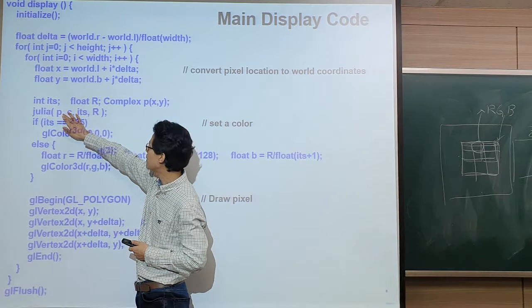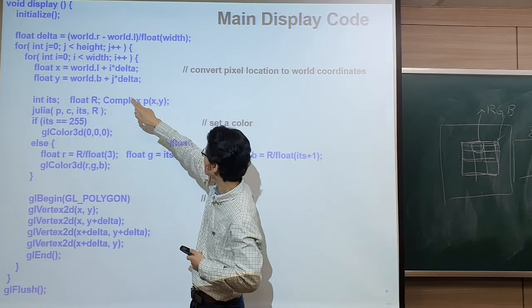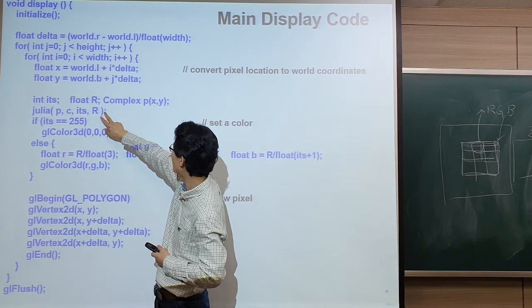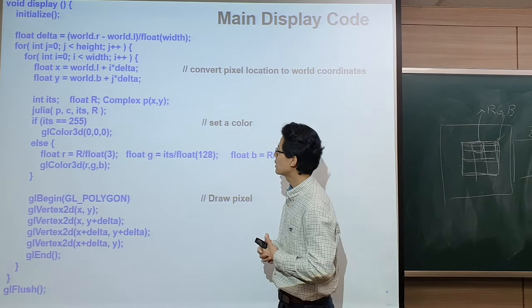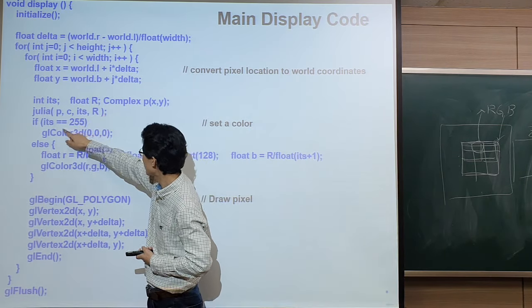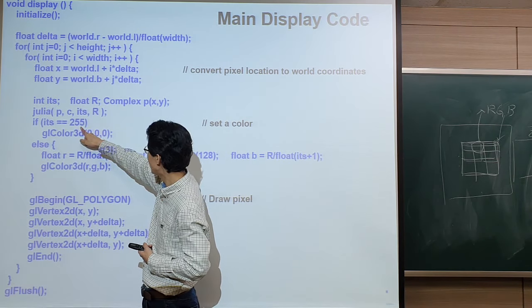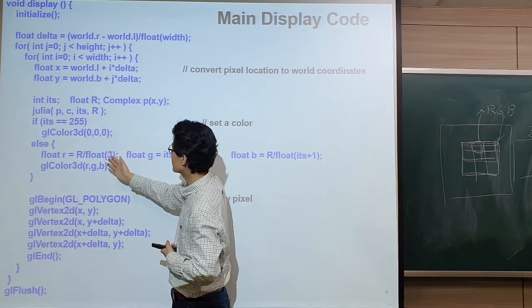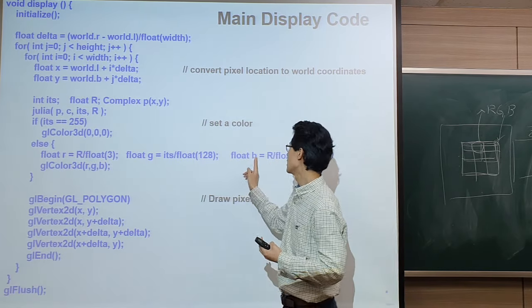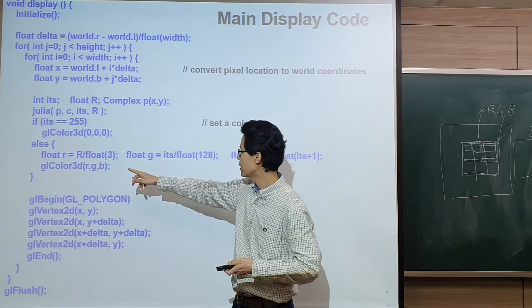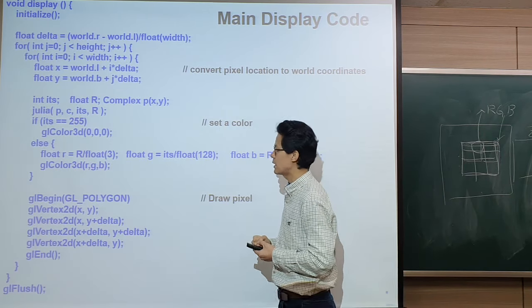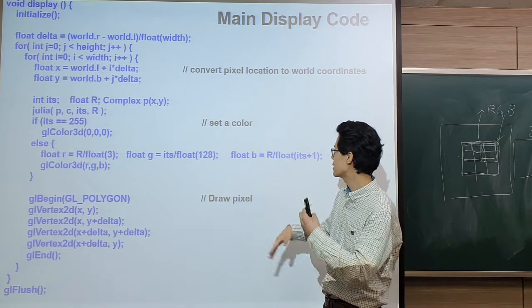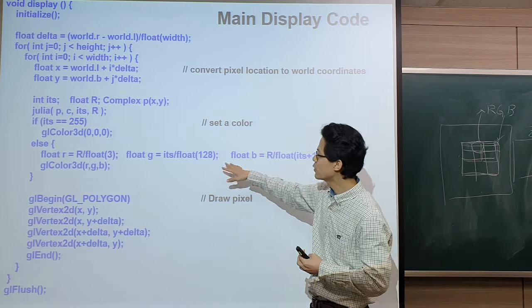We then call the Julia set code we talked about last time. We give it point P — the x and y coordinate — with parameter C, iteration number, and R. You might remember: if the Julia set returns that the iteration number hits the maximum value (in this case 255), then it has converged, so we set a black color. For other cases, we compute some color r, g, b by utilizing the iteration number and the magnitude R value.